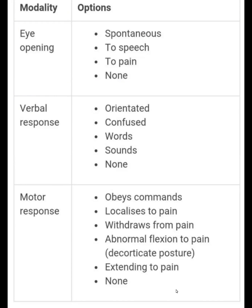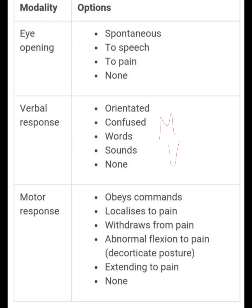Now we will talk about GCS made easy with mnemonics. The mnemonic is MVE: Motor, Verbal, and Eye. The maximum scores are six, five, and four respectively.